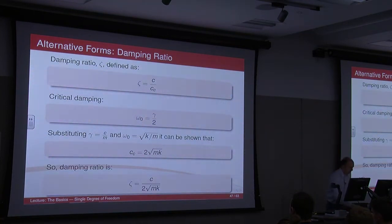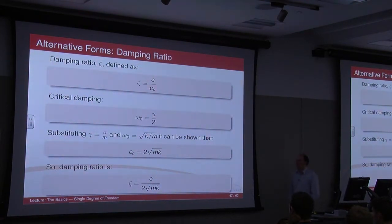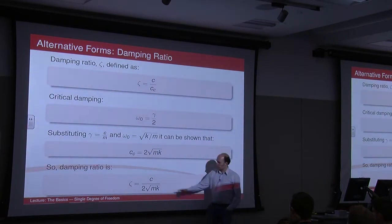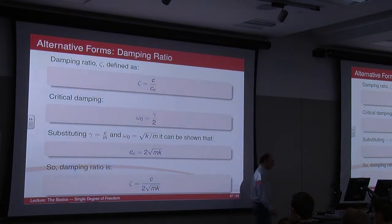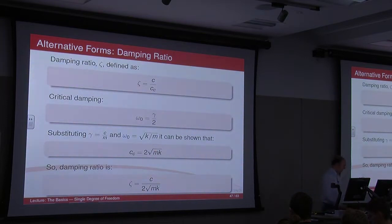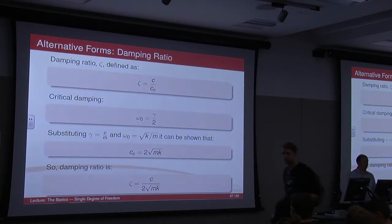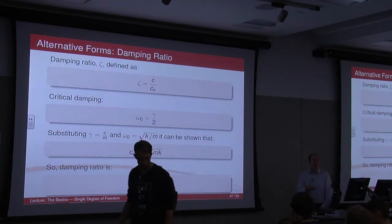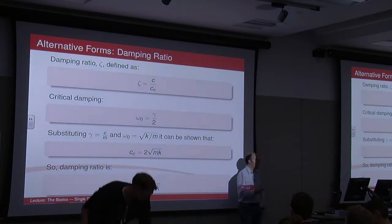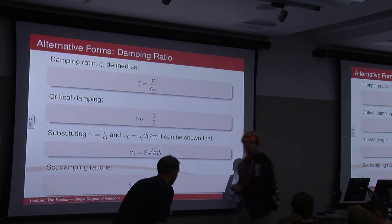And then you can rearrange to get the damping ratio, c divided by 2 root mk. The damping ratio is an important quantity because it will help us, just by looking at the damping ratio, it helps us know whether our system is damped, underdamped or overdamped, or whether we're at critical damping.